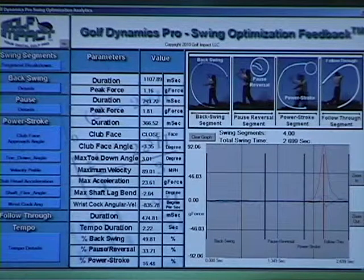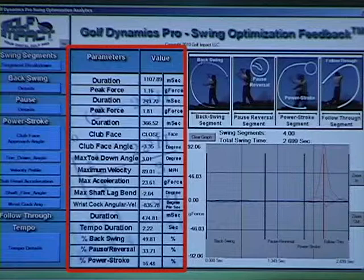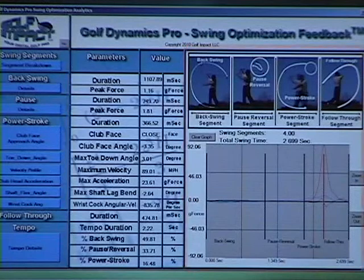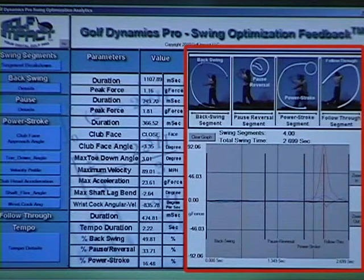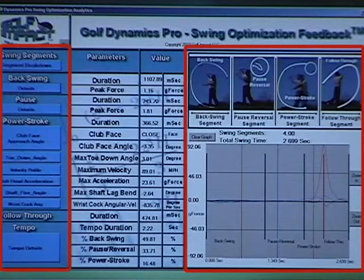The swing optimization feedback screen has two main sections: a numerical section with key values, and a graphical section that allows you to graph each metric versus time. The graph selection buttons are next to each listed metric.